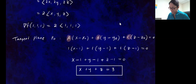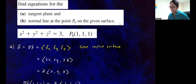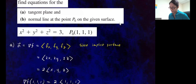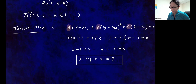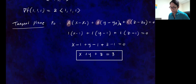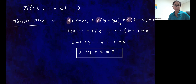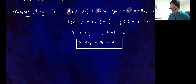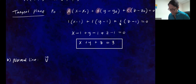Now we're going to find the equation of the normal line at that point to the surface. The normal line is the line that's parallel to the gradient vector, so the direction of that line is going to be in the direction of the gradient vector. For part B, we're going to use a direction vector V that is parallel to the gradient vector at point P-O.